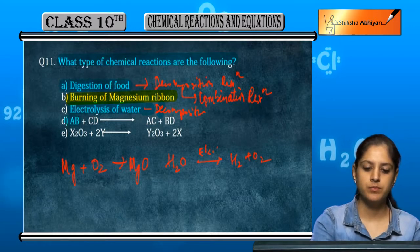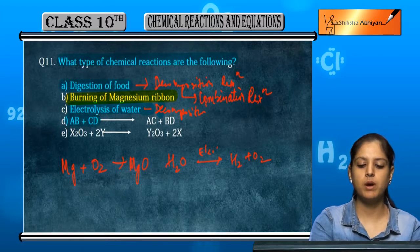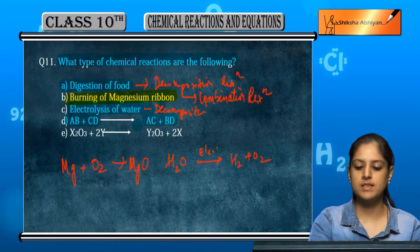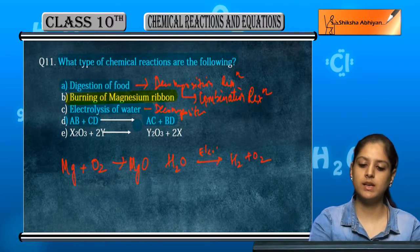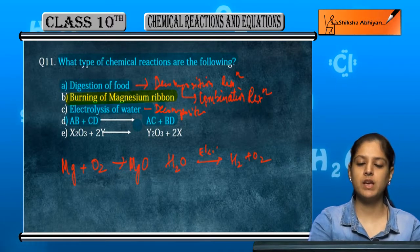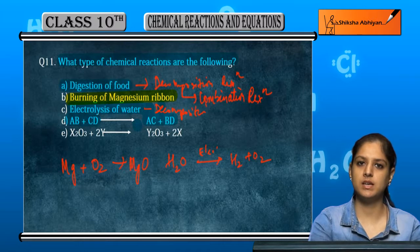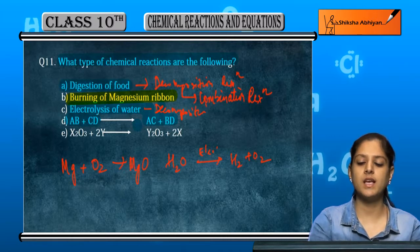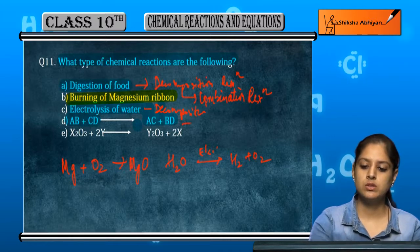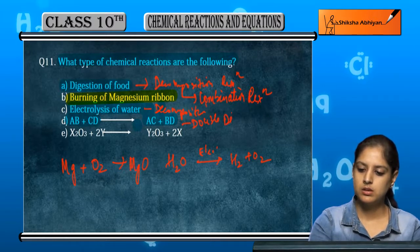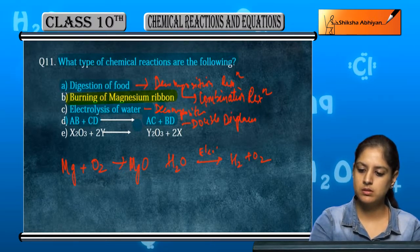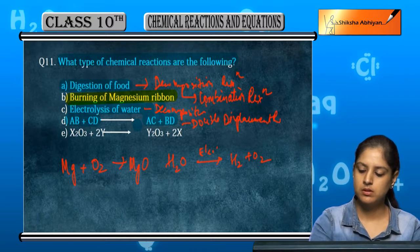Next is AB plus CD. They react to form AC and BD. This is a double displacement reaction.